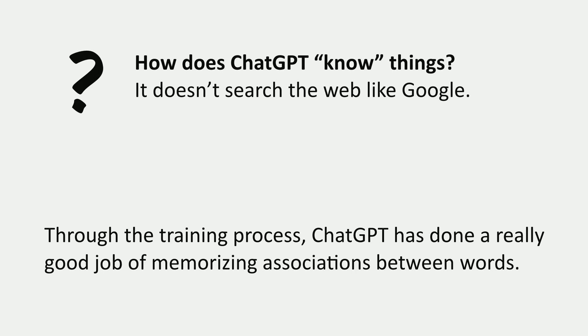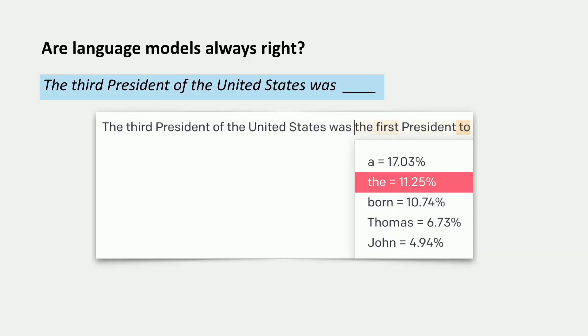This is enough to capture a lot of knowledge and return a lot of useful answers. However, language models are not always right. And if we start to look at what happens in the probabilities of the raw language model, we can start to see some evidence of where they might break down.